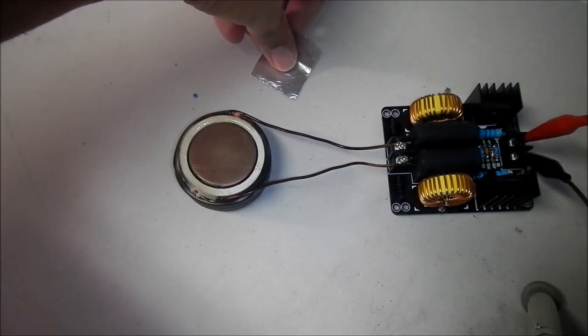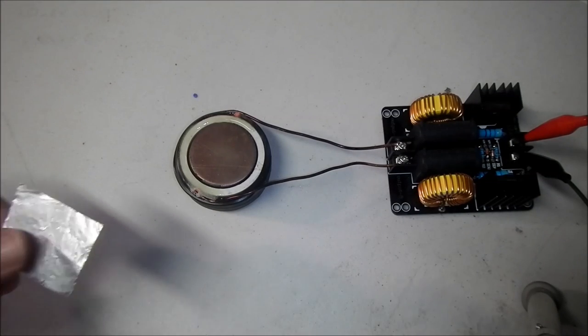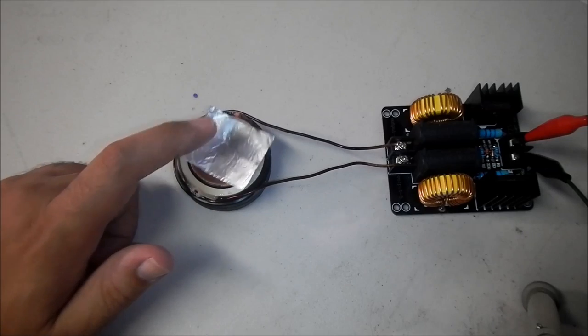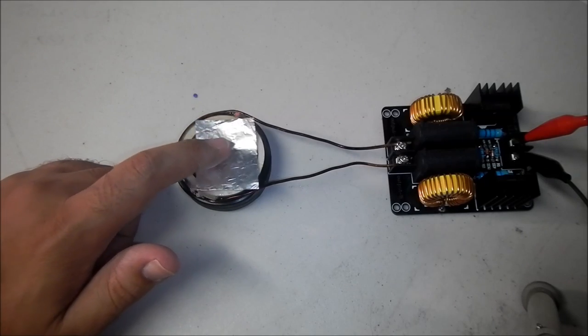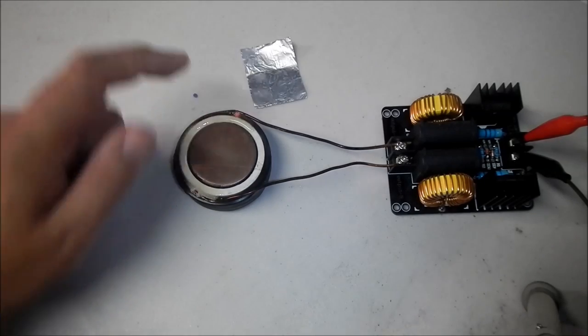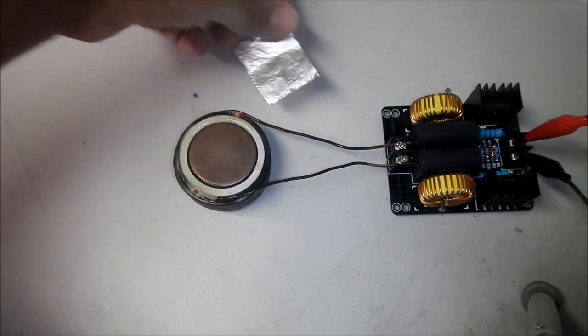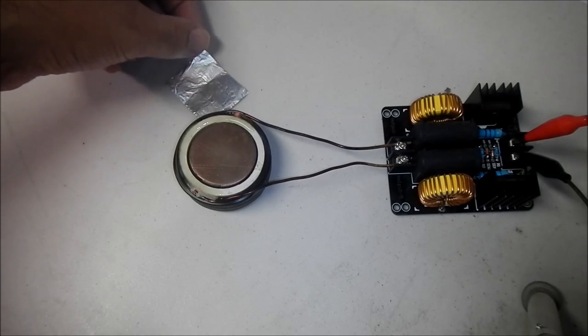Now let's see if we can attract the aluminum. So now you can see that if I try to push the aluminum out, it gets pulled back in towards the center. Now if you go too far, it'll be repelled again.